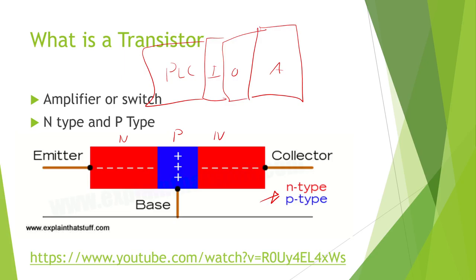Transistors and MOSFETs are used as digital outputs on PLCs. Digital outputs have three options: transistors or MOSFETs, triacs, and relays. Internally a PLC could have relays, which have much higher current-carrying capacity than transistors. However, relays are also mechanical devices that can go bad — a little give and take when choosing which type.